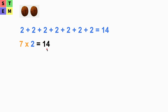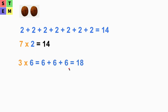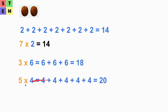Let's take a look at another example. We have three times six, which we can write as six plus six plus six — three times of six. Six plus six is 12, and 12 plus six is 18, so three times six equals 18.